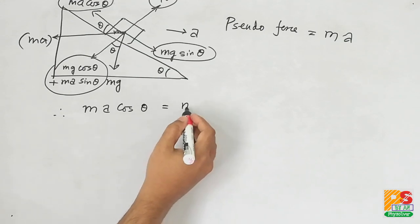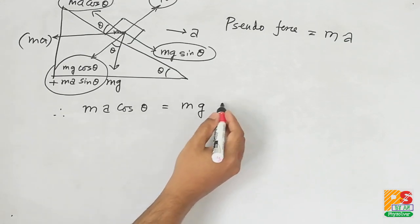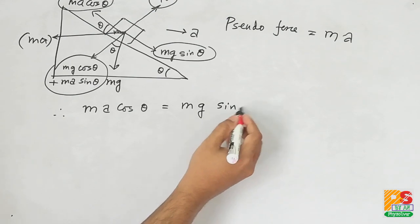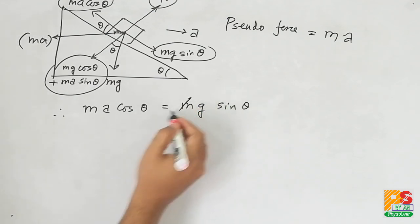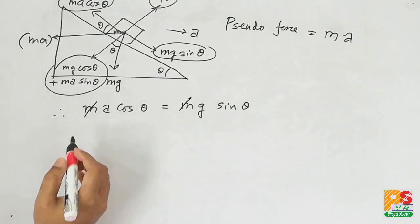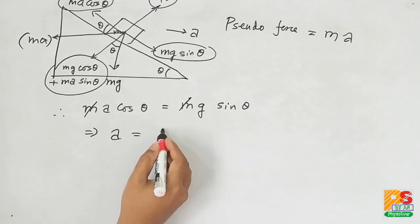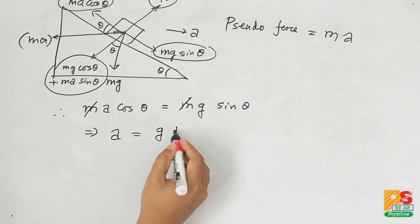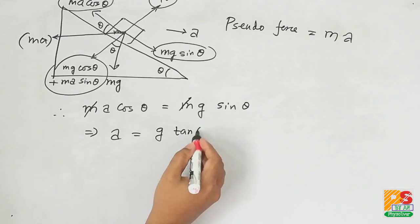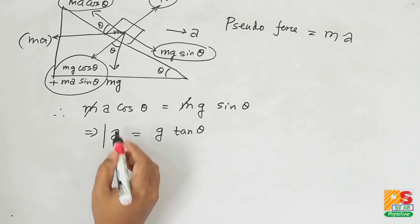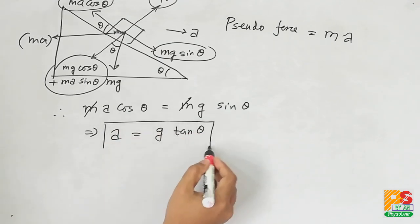Let's write ma cos theta equals to mg sin theta, why? Because the body has no acceleration along the incline. Therefore acceleration of the wedge should be g tan theta. So look at the options, option 4 is correct.